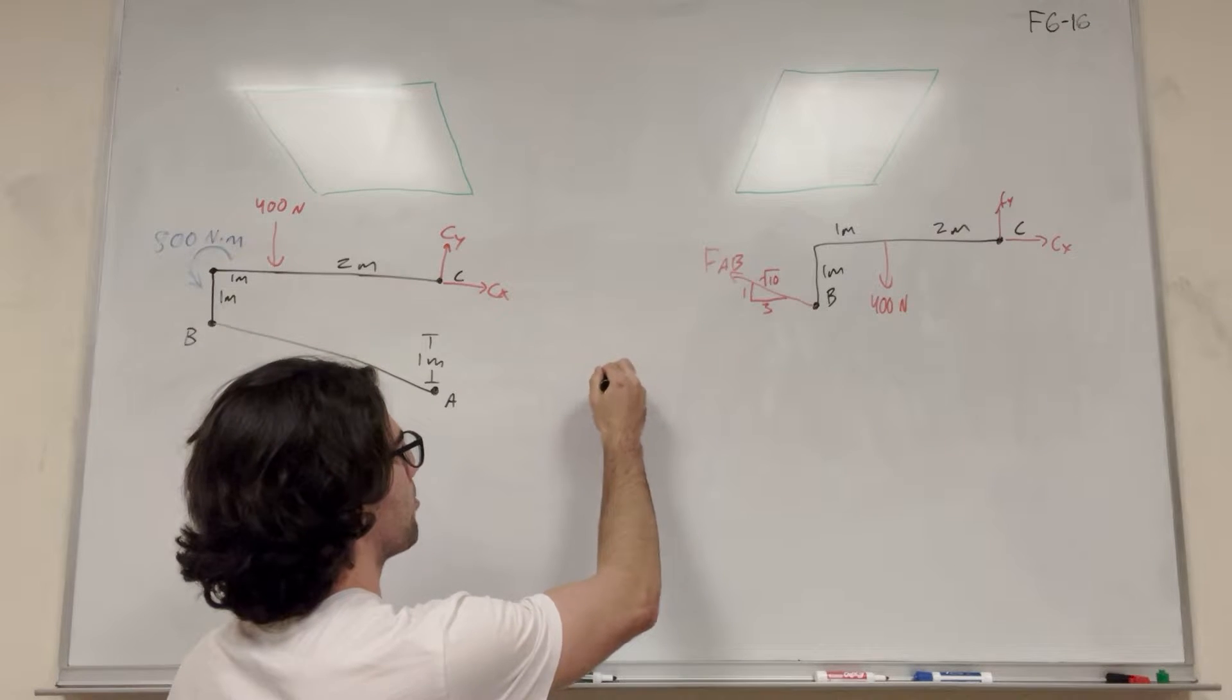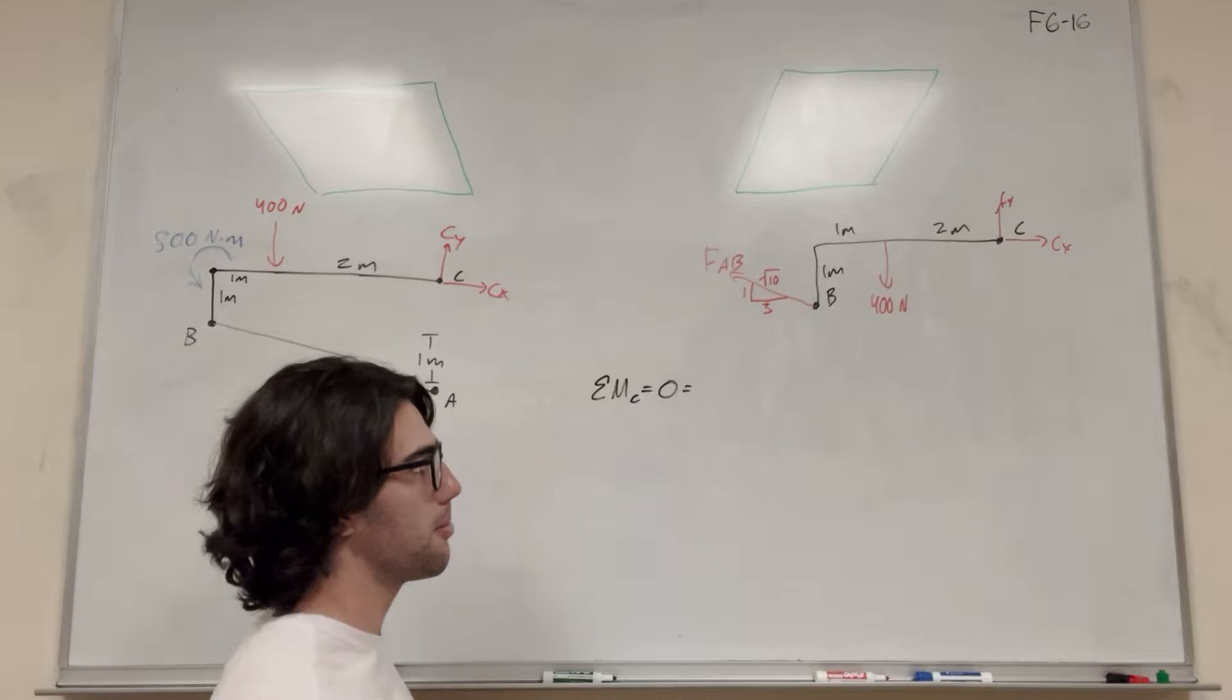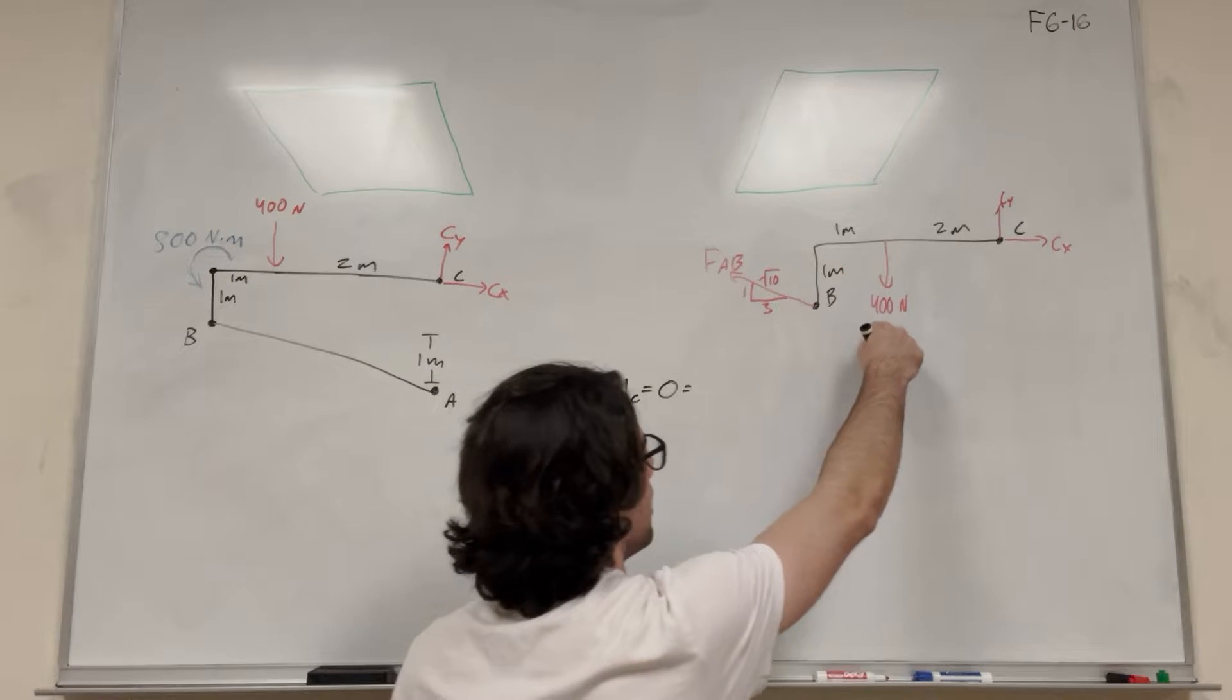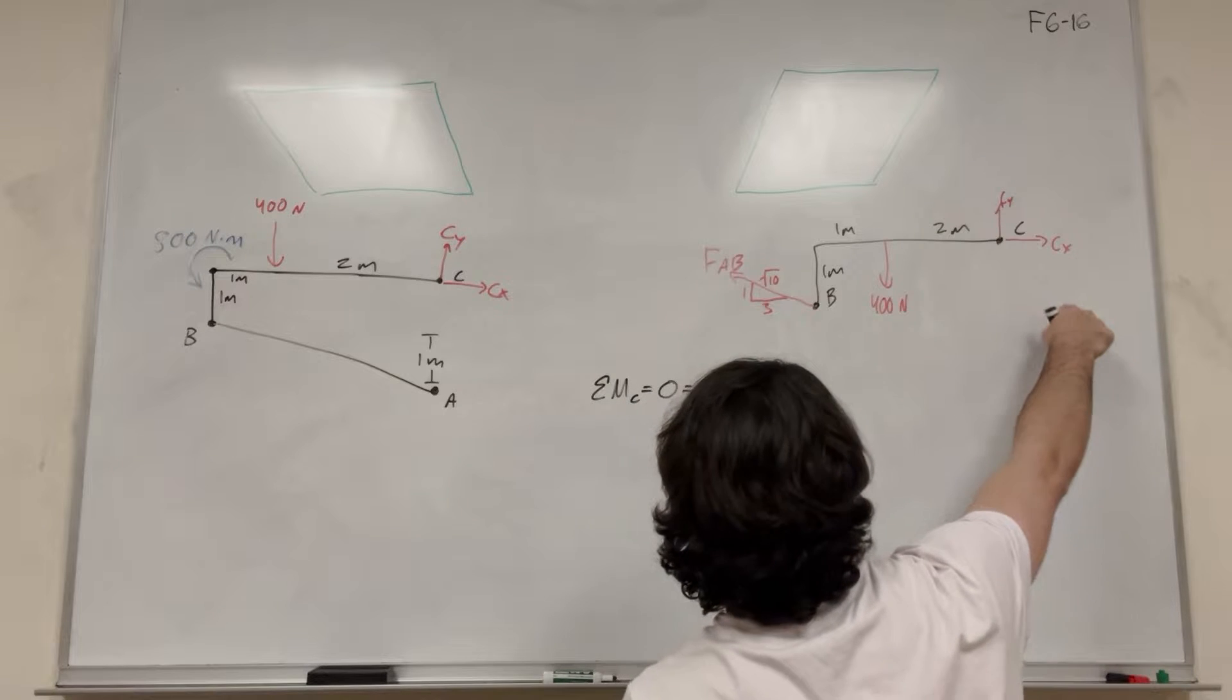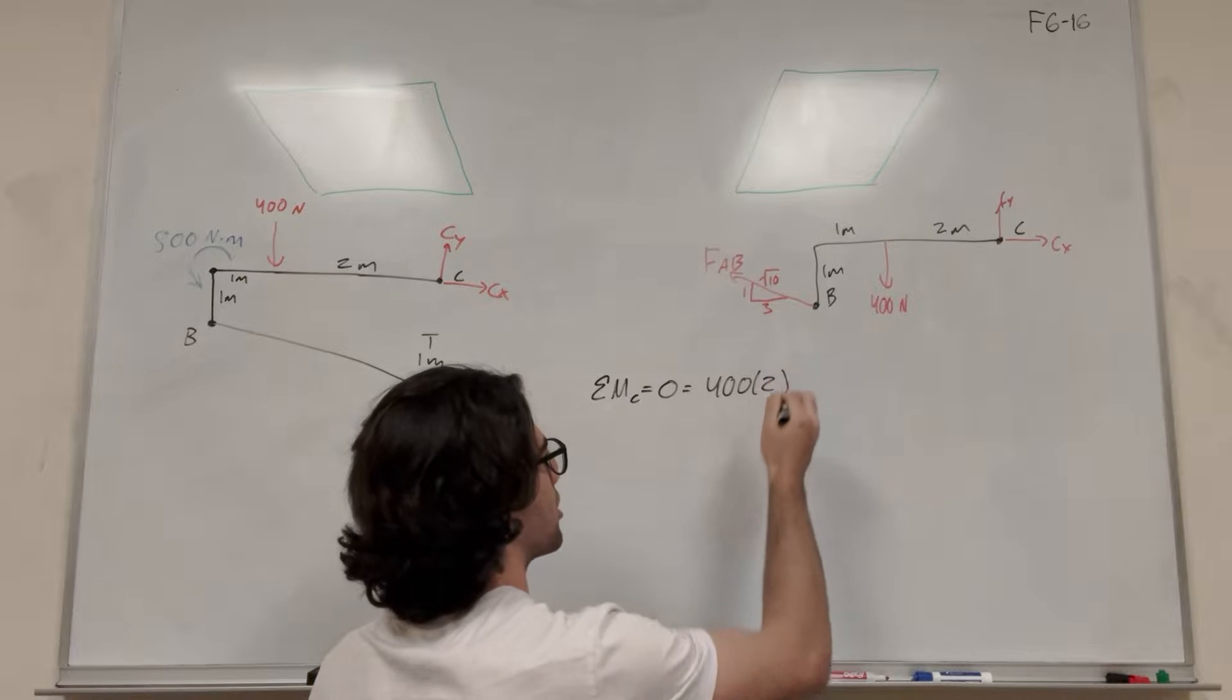So what's that equation going to look like? So if you do sum of the moments around C, we know it's going to be equal to zero because we're at equilibrium. And so we have this 400 Newton force pushing downward here. It's going to make us want to rotate counterclockwise. So it's going to be a positive 400 times its distance away, which is two.